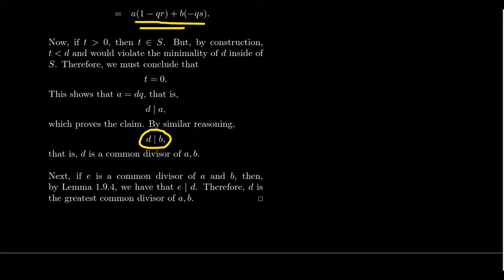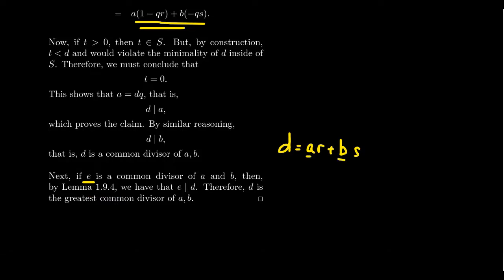Now to be the greatest common divisor, we must show that any other common divisor of A and B also divides D. Suppose E is a common divisor of A and B. Since D equals AR plus BS, by the lemma we proved earlier, since E divides A and E divides B, E divides any linear combination of A and B. Therefore E divides D. Since E was an arbitrary common divisor, we conclude that D is the greatest common divisor.